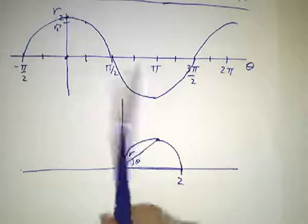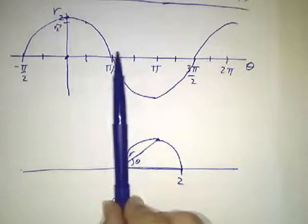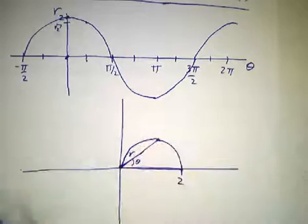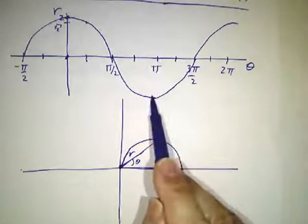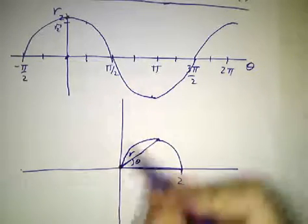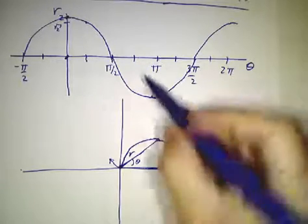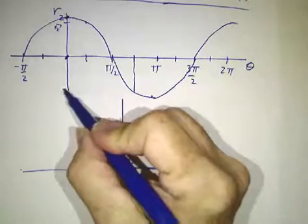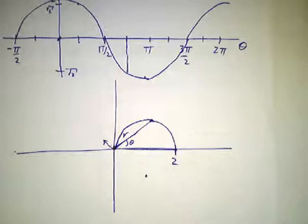And then something funny happens. What happens as we continue going in this direction? Increasing theta from pi over 2 all the way to pi. Well, between pi over 2 and pi, r is negative. So, we want to go, for example, when in this direction, we want to go a distance minus the square root of 2. Well, that's the same thing as going a distance of the square root of 2 back the other way.